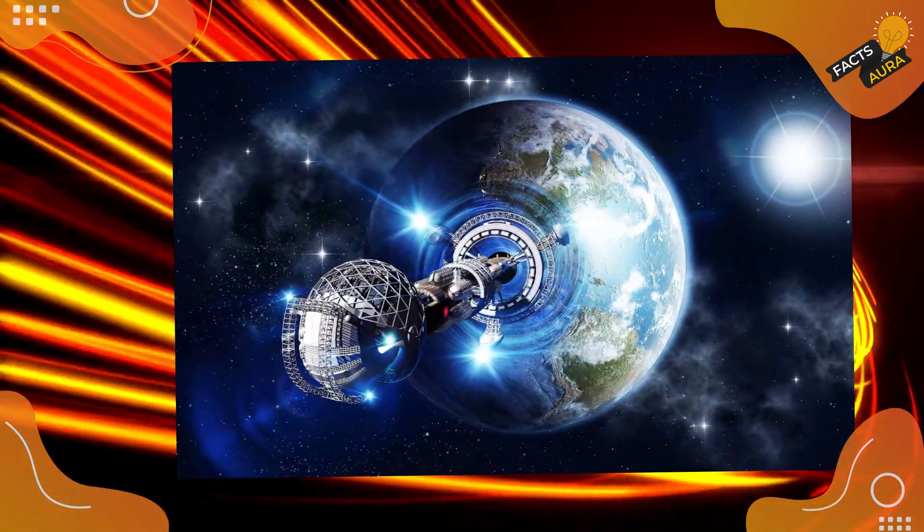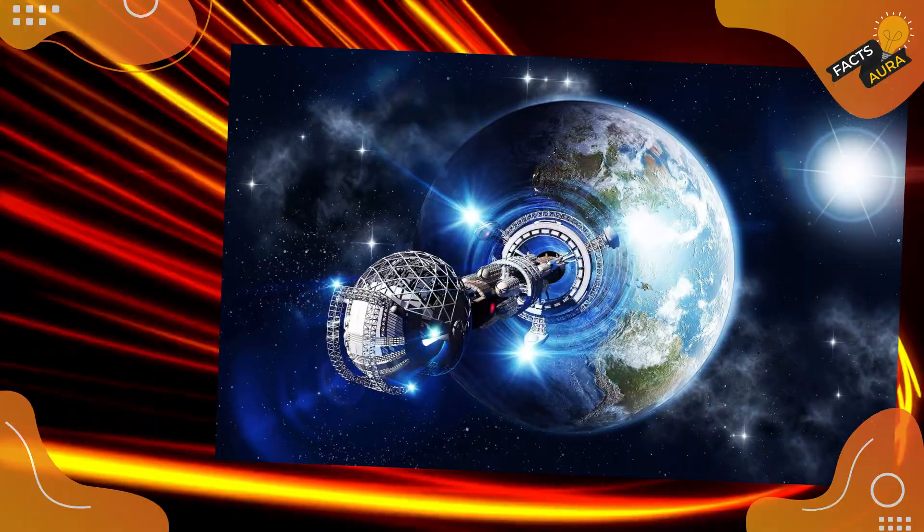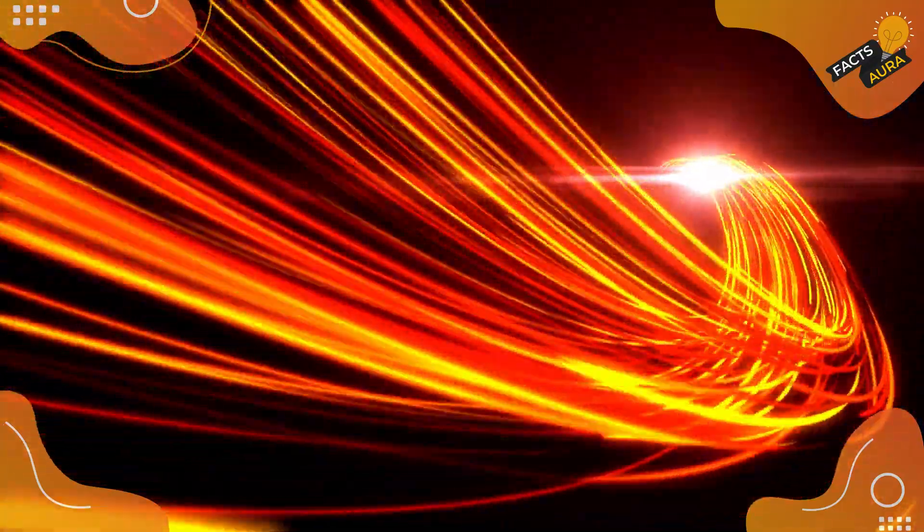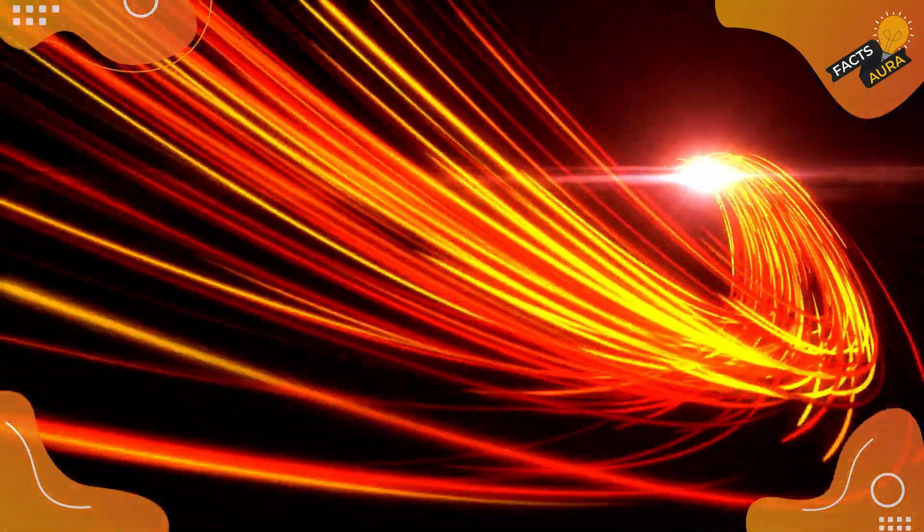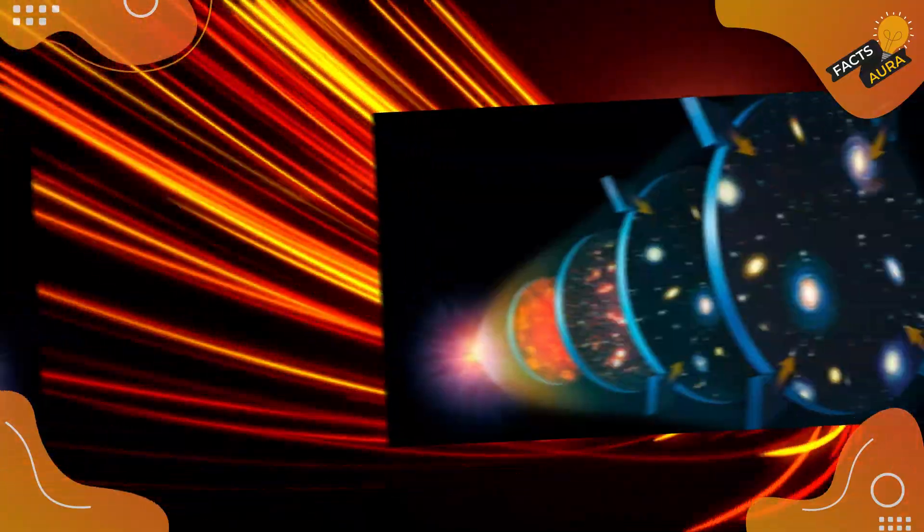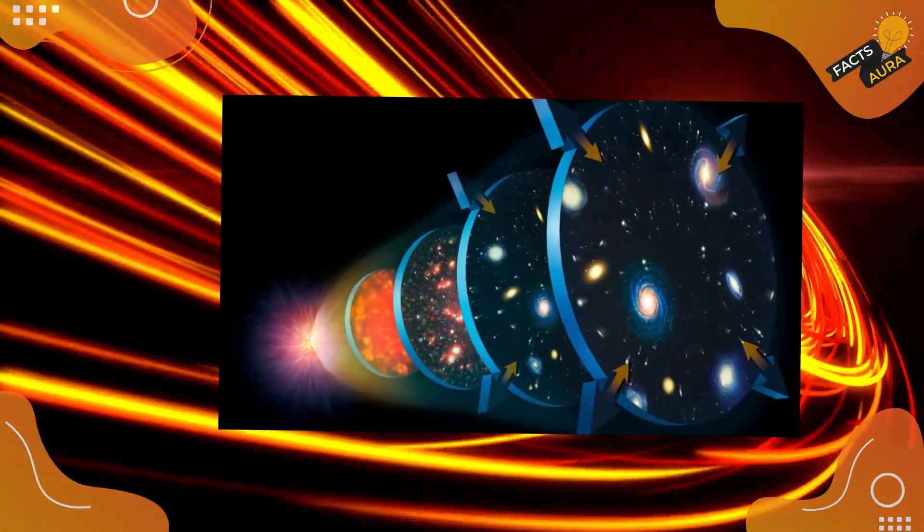Picture a universe where light travels twice as fast in one direction. How would we perceive distance? Time? Our measurements could be thrown off so significantly that our picture of the universe might look entirely different.